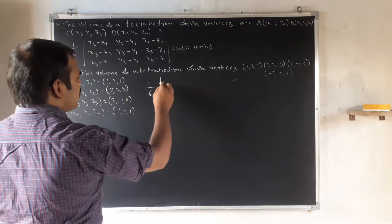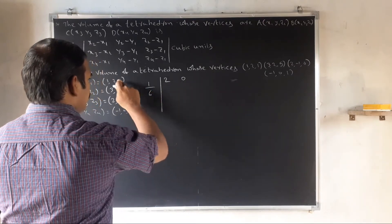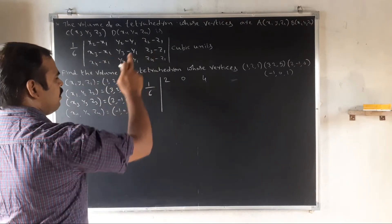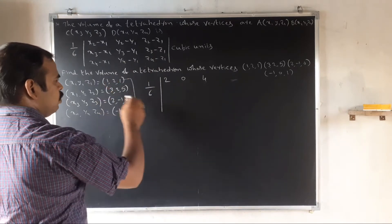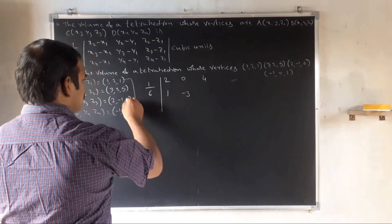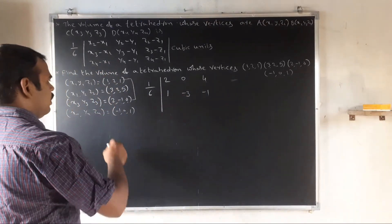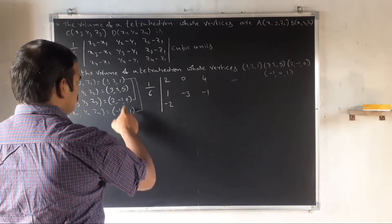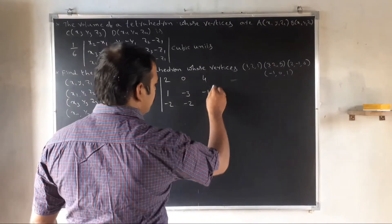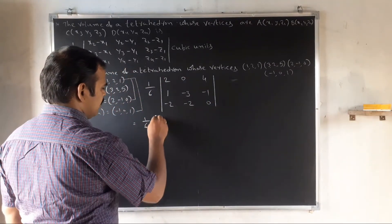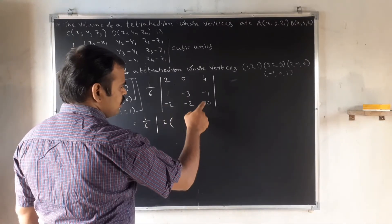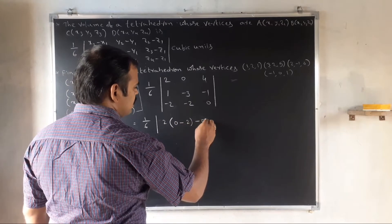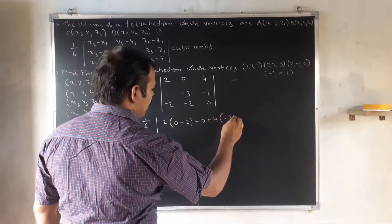Computing the determinant rows: first row (x2−x1, y2−y1, z2−z1) = (2, 0, 4); second row (x3−x1, y3−y1, z3−z1) = (1, −3, −1); third row (x4−x1, y4−y1, z4−z1) = (−2, −2, 0). Expanding: (1/6) times [2·(0−(−2)) − 0·(0−2) + 4·(−2−6)].